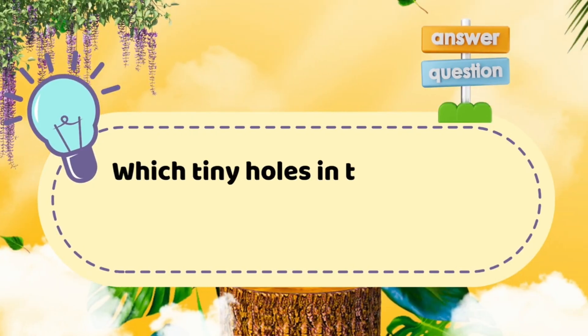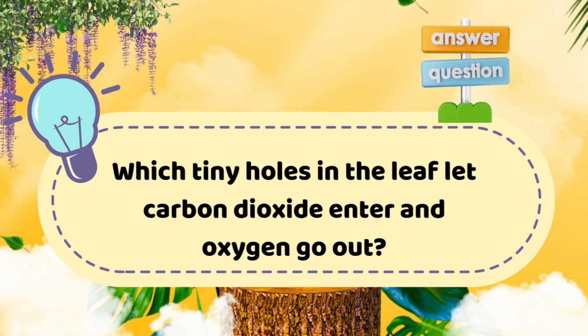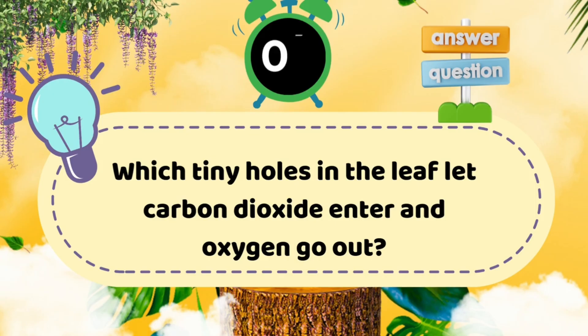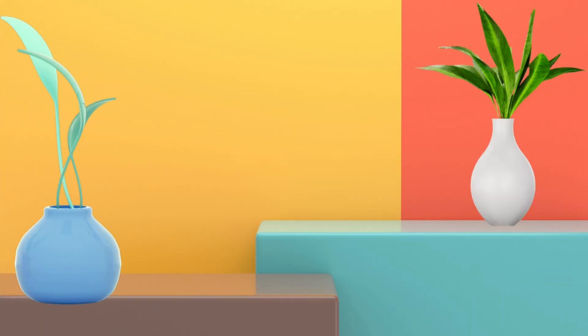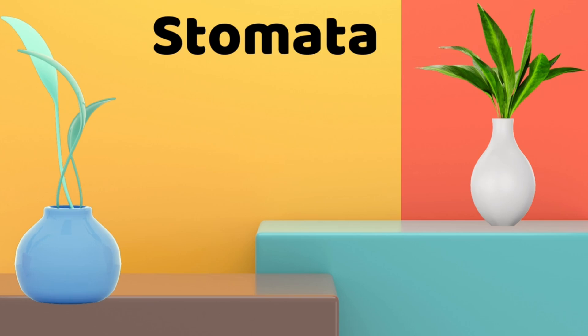Question three: Which tiny holes in the leaf let carbon dioxide enter and oxygen go out? Answer: stomata. Perfect, those are the leaf's little doors.